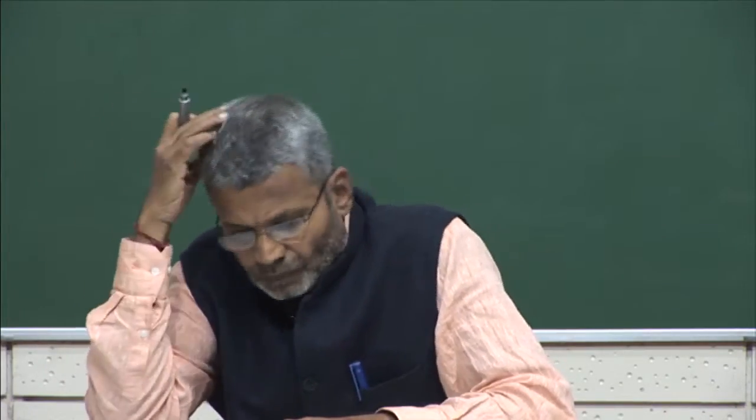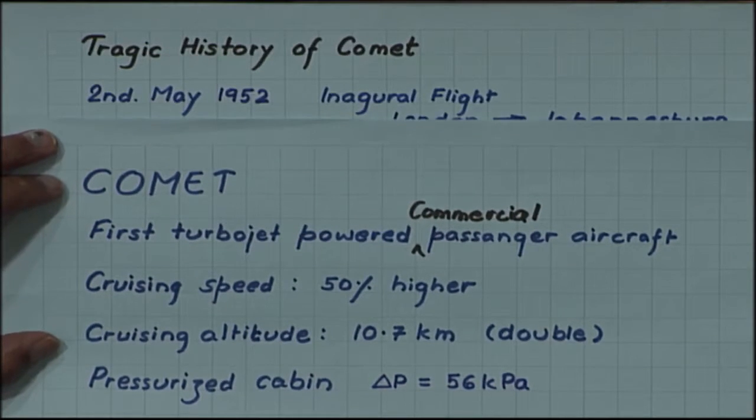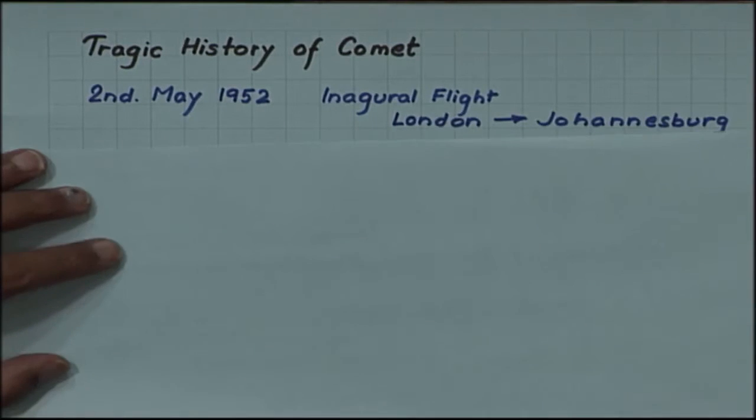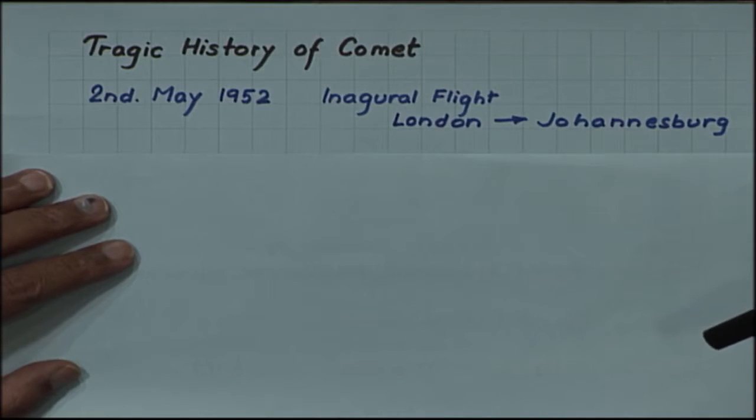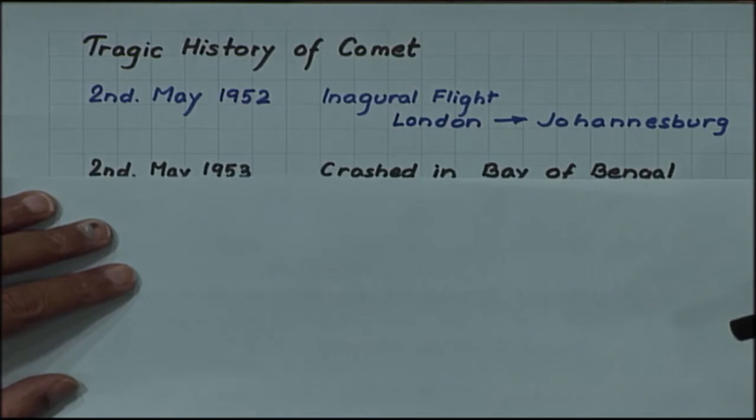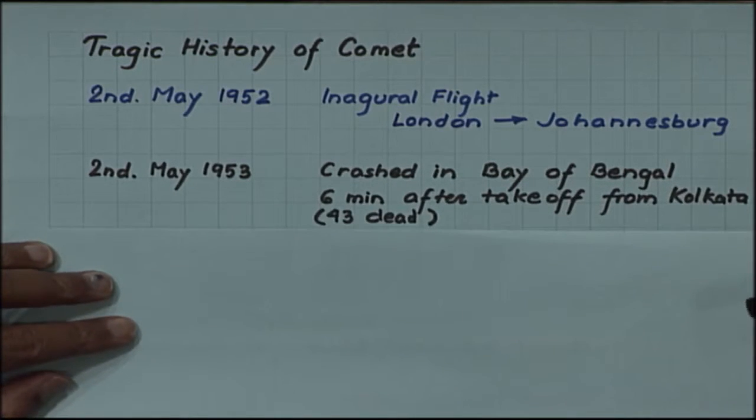But the history of this Comet aircraft turned out to be very tragic. The first inaugural flight took place on 2nd May 1952 from London to Johannesburg. Then exactly after one year, on the very first anniversary, the first crash took place 6 minutes after takeoff from Kolkata, India. 43 people died.